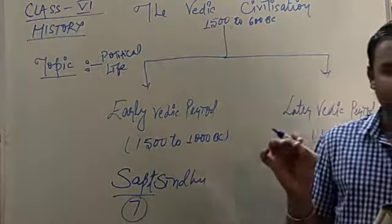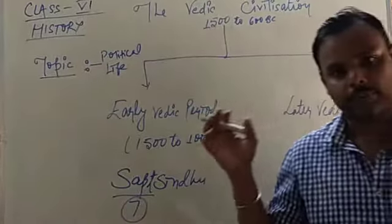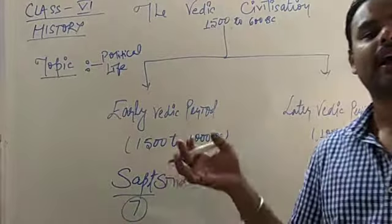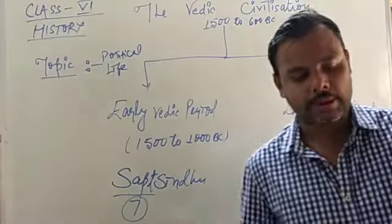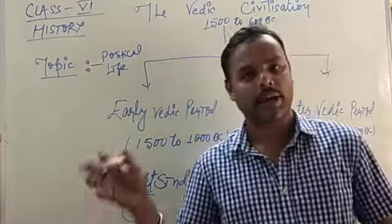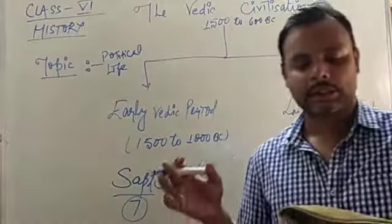The early Vedic people lived in the region called Sapt Sindhu which is now a place in Haryana and Punjab. The rivers that flowed there were the Indus, Jhelam, Chenam, Ravi, Beas, Satlaj and Saraswati. River Saraswati is no more, it has dried up. The rest of the six rivers are still there.